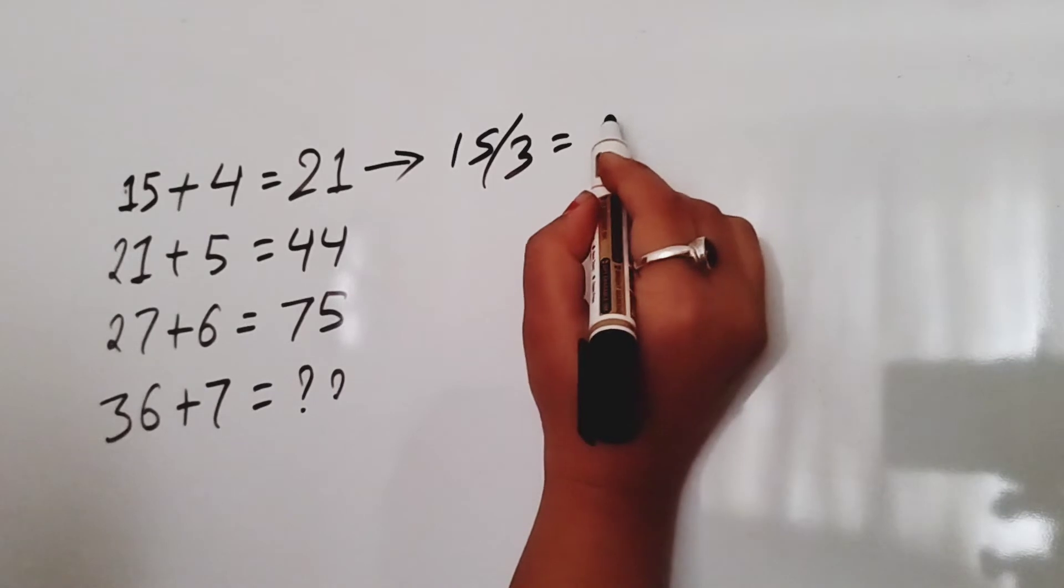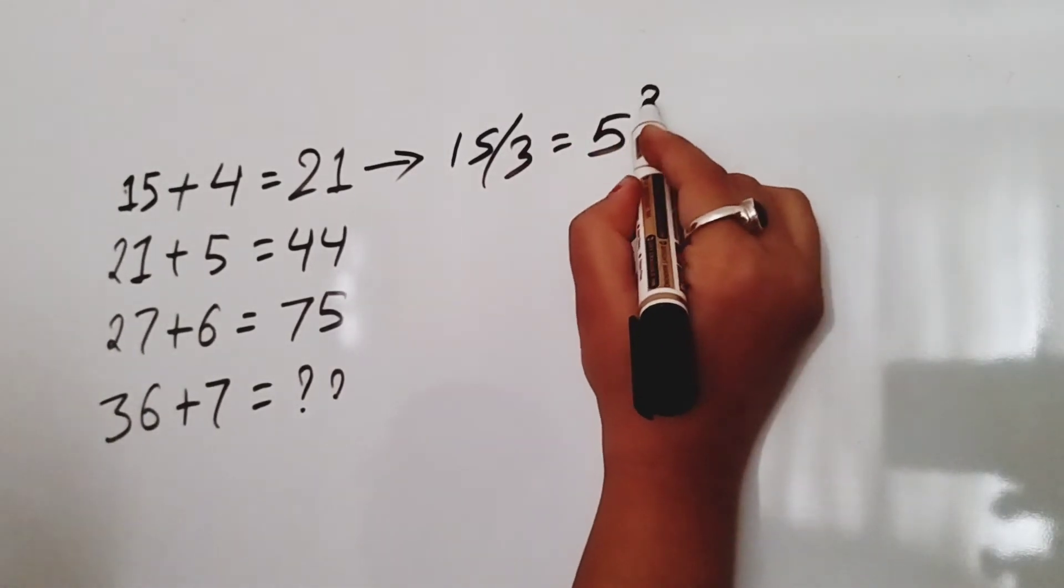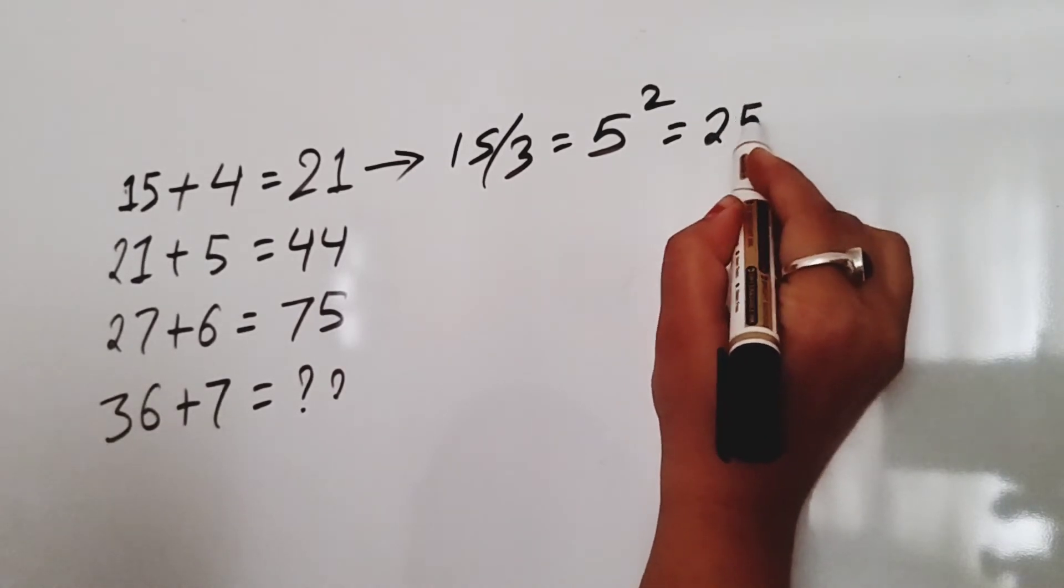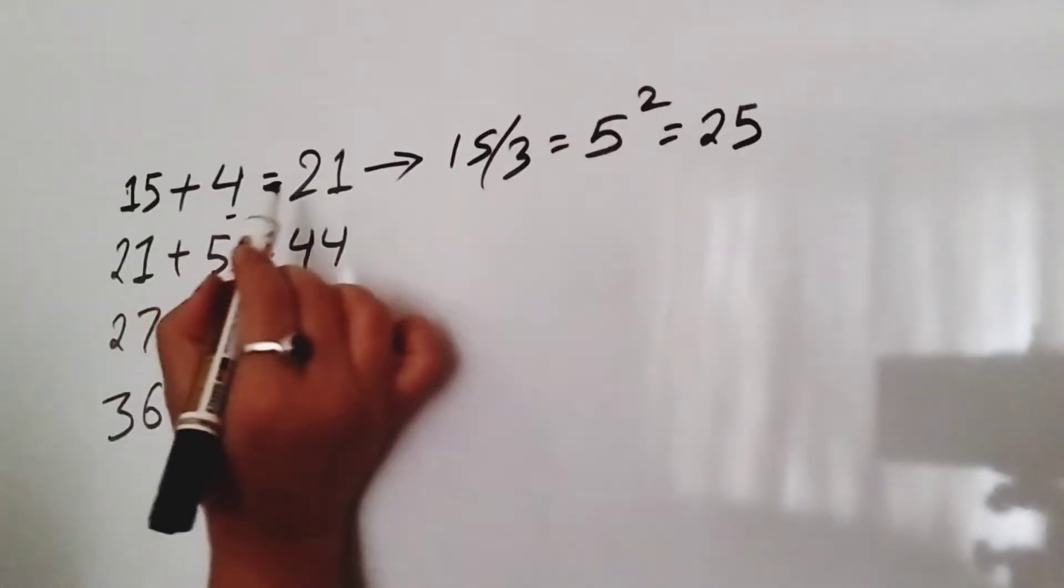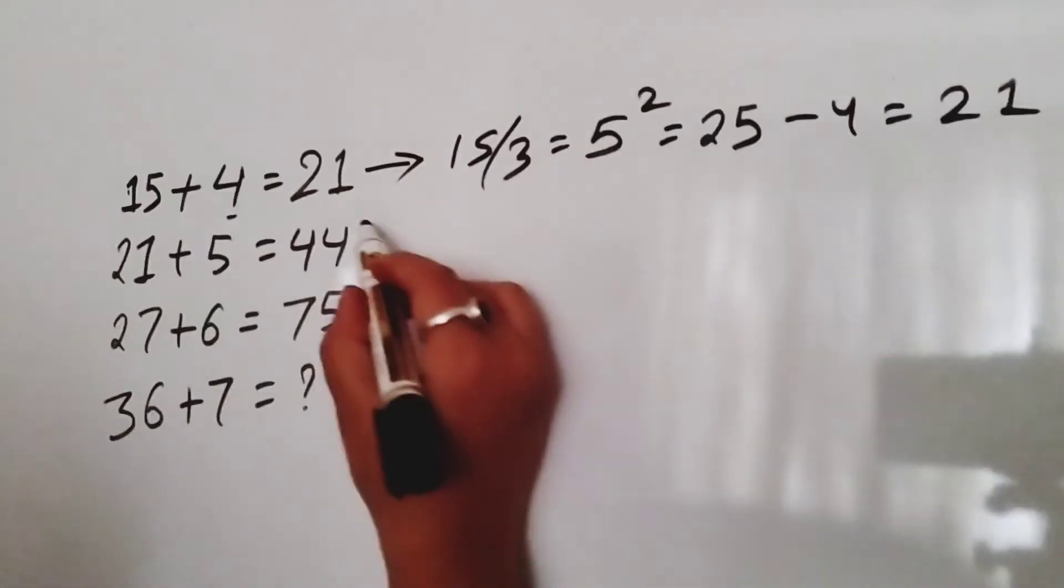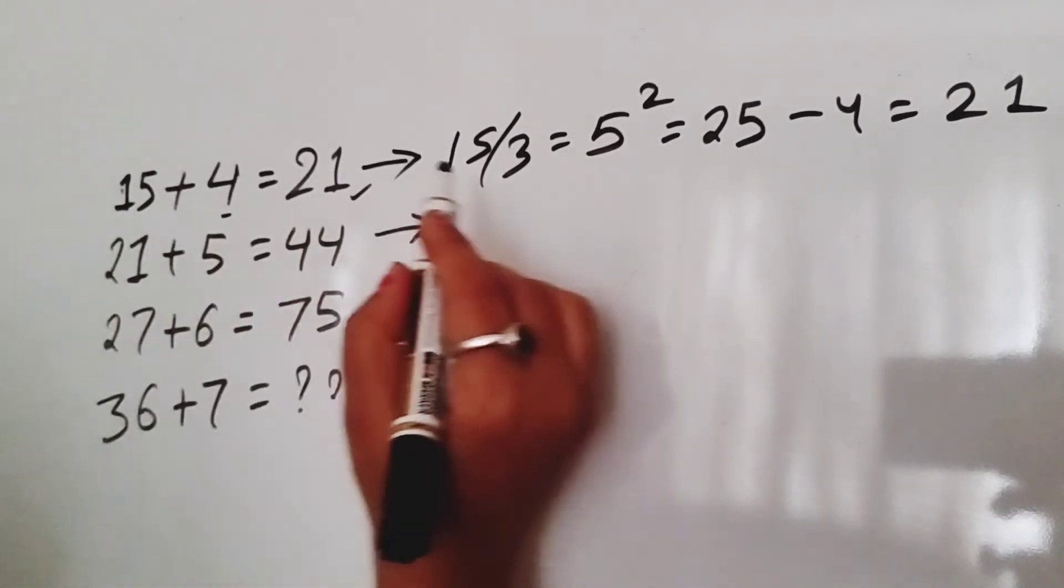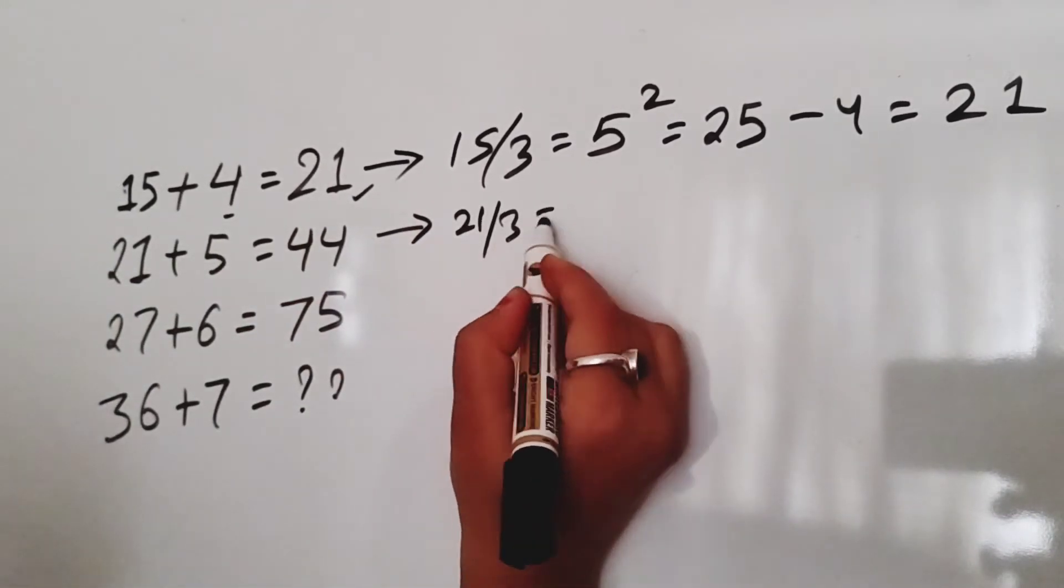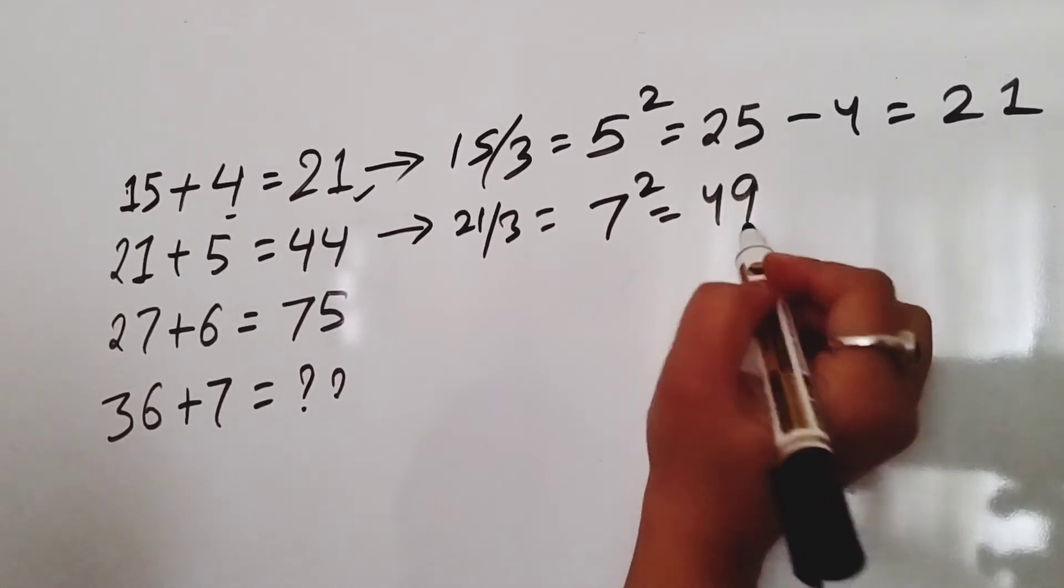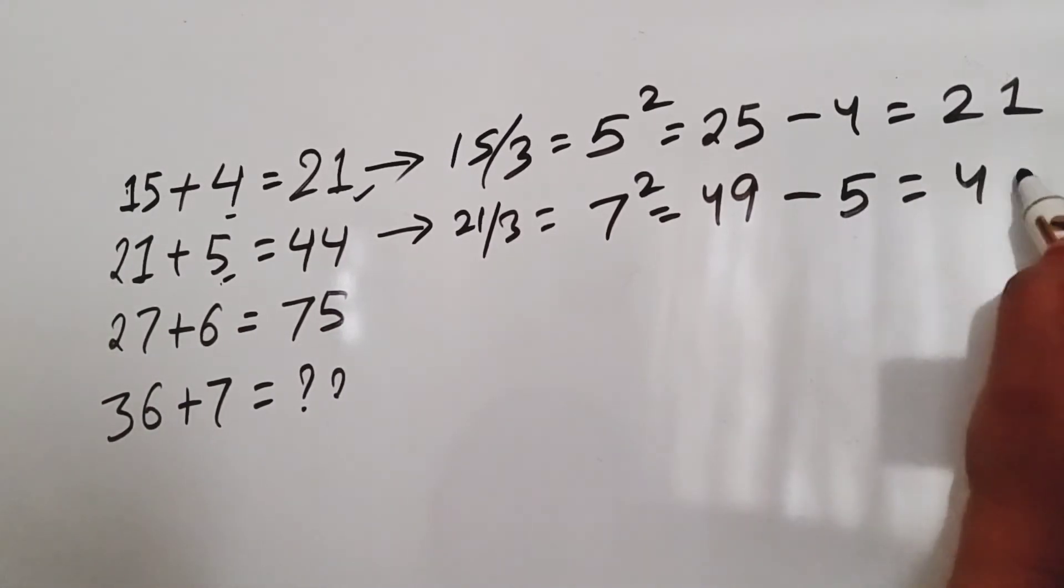We will take the square: 5 squared is 25. Then minus the second number 4, we are getting 21. Let's check the second row: 21 divided by 3 is 7. 7 squared is 49, minus the second number 5 equals 44.